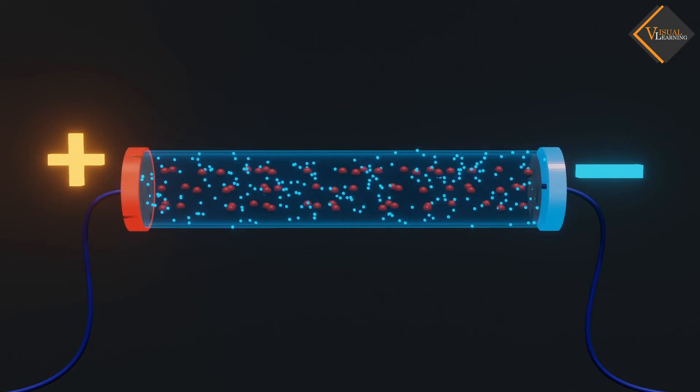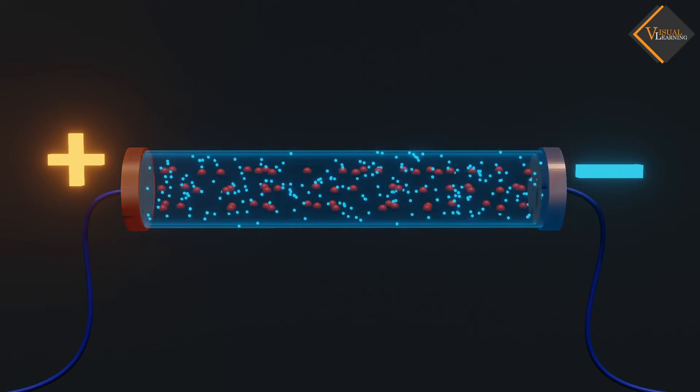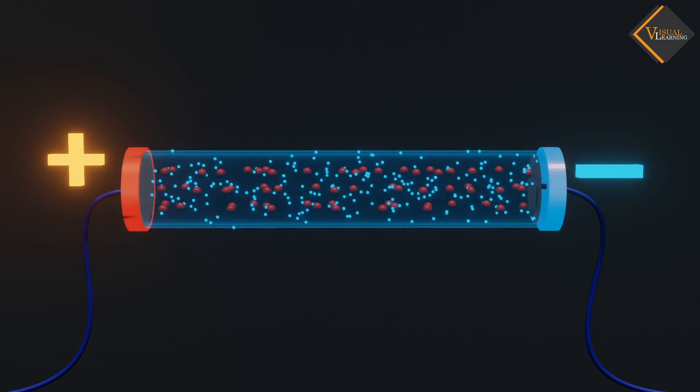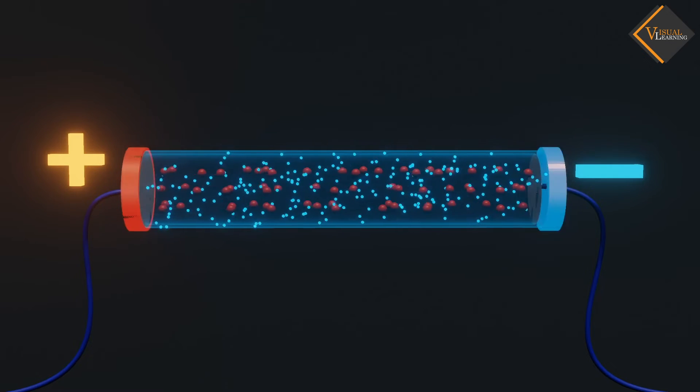These two forces make the electrons flow in a particular direction, say negative to positive terminal of the battery.